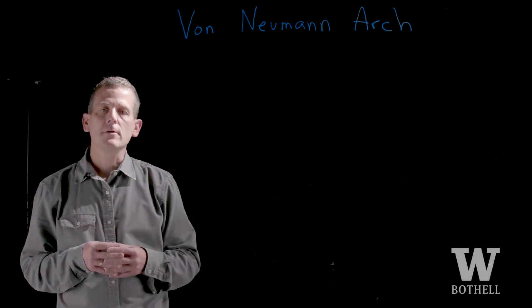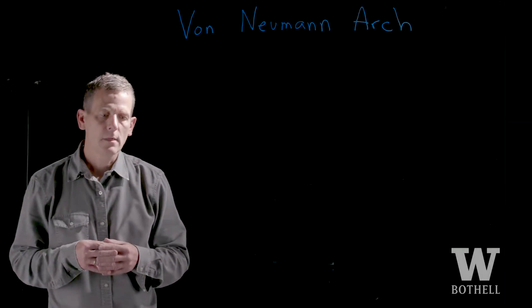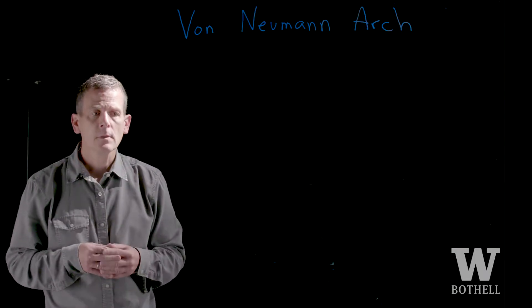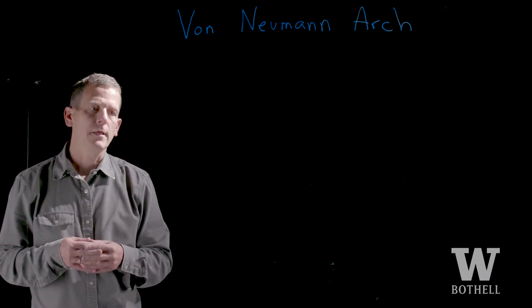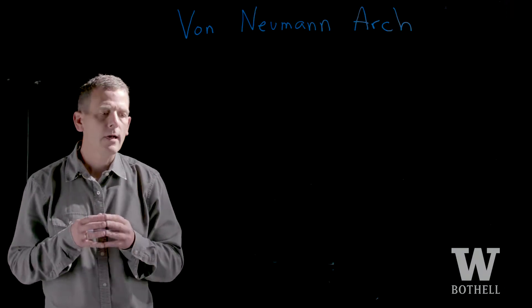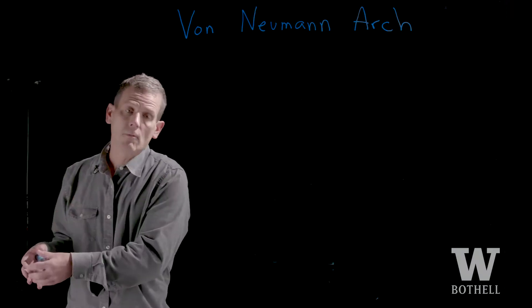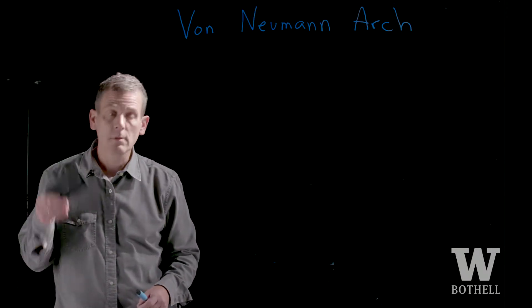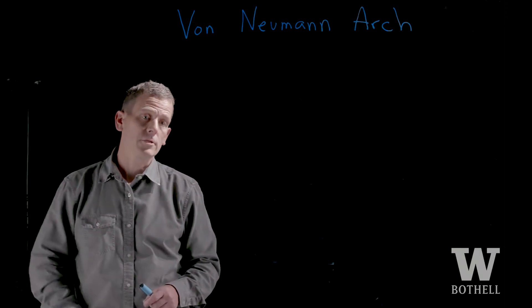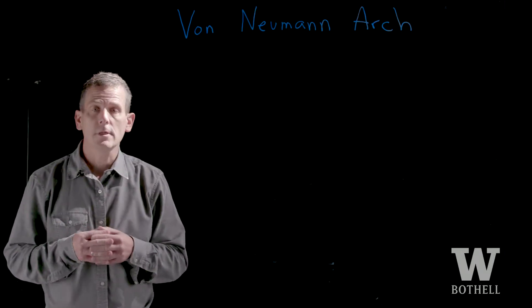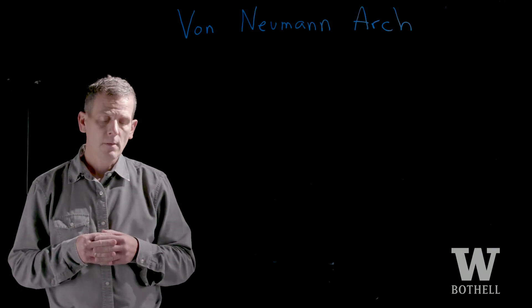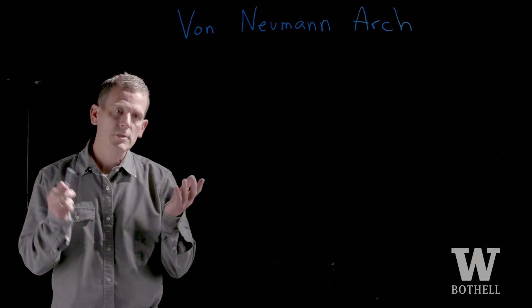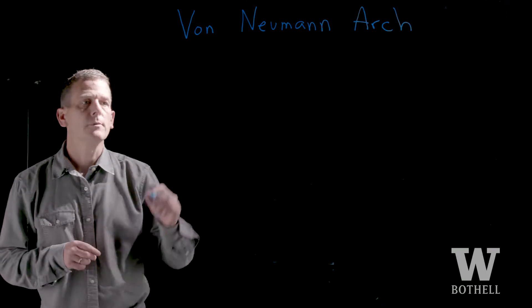Hi, we're going to talk about the von Neumann architecture and its impact on operating systems and computers in general. All computers today, whether it's a server up in the Amazon cloud, a server run locally, or even something as simple as your phone, are based upon this architecture. The von Neumann architecture was introduced in the mid-20th century. The first such computer was the ENIAC. Let's learn a little more about this fundamental aspect of computing.